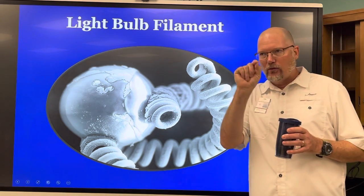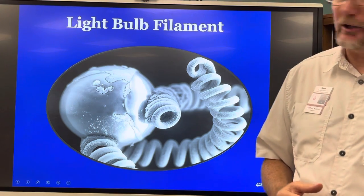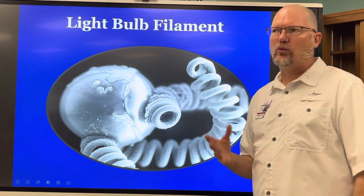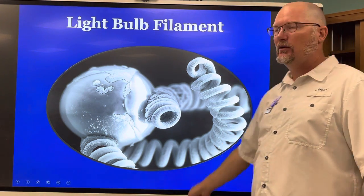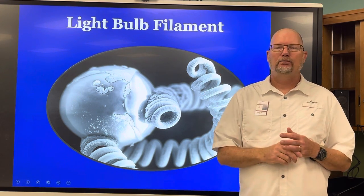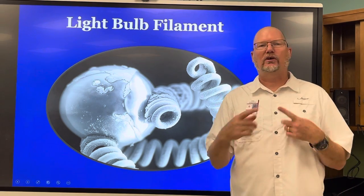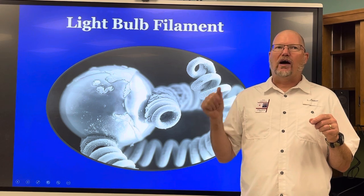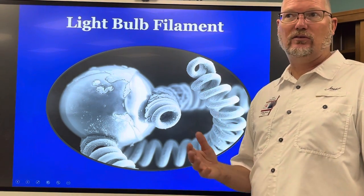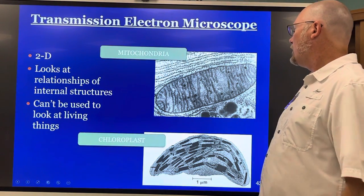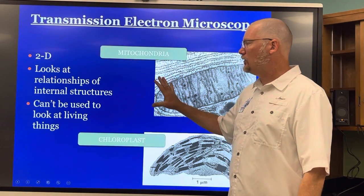This is a light bulb filament — the tiny squiggly wire inside an incandescent bulb that gets hot and gives off light. The newer LED bulbs don't give off much heat and use less energy. The inventor of the light bulb tried many materials and finally settled on tungsten, element W on the periodic table, as the best material. The transmission electron microscope is another type of electron microscope that looks at two-dimensional structures.